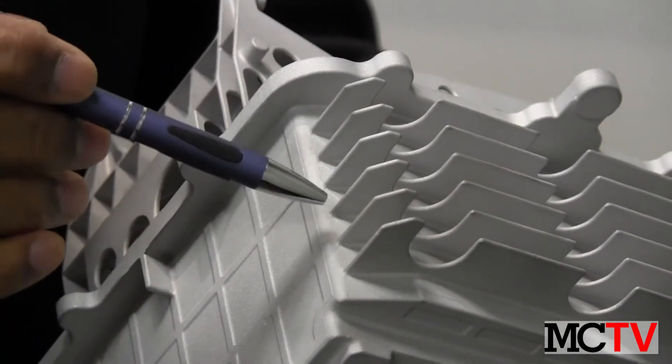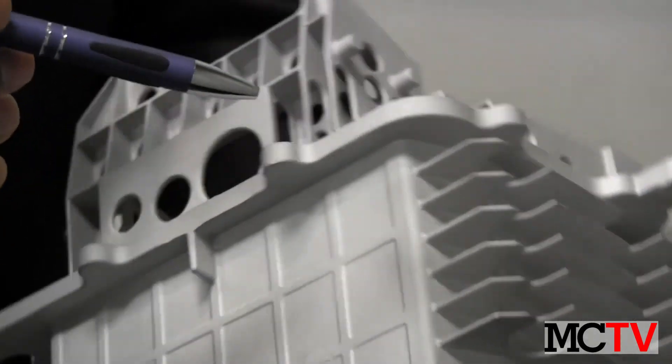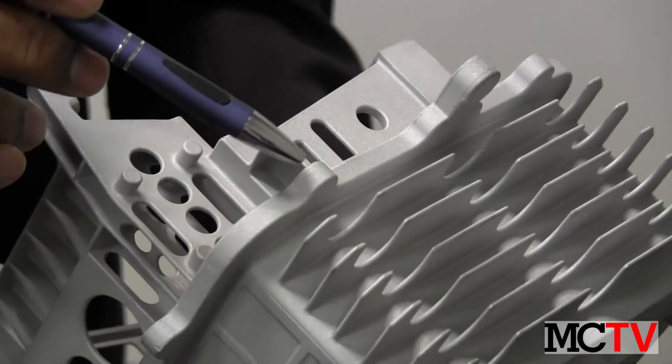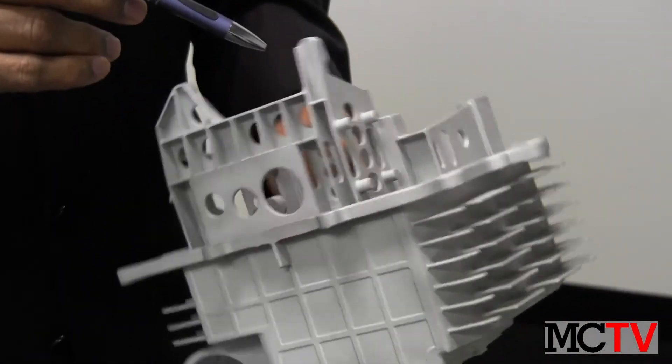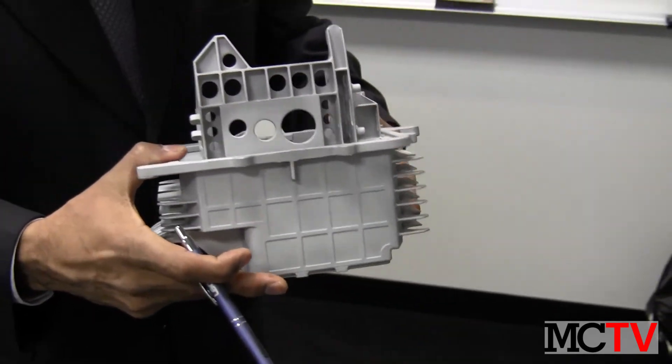So this is an integral part of the casting design and manufacturing process. The rounding, smooth transitions, avoiding sharp corners are essential in making such a high integral, integrated complex shape casting successfully.